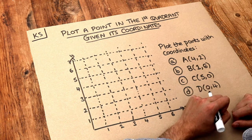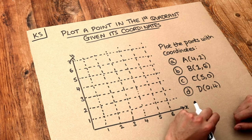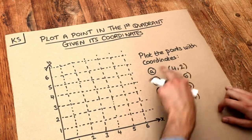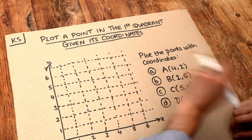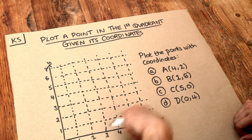Now in a previous video we looked at how we can read off the coordinates of a point that's already plotted for us. So now we're doing the reverse - we've been given the coordinates and we want to draw where that point is on the axis here.